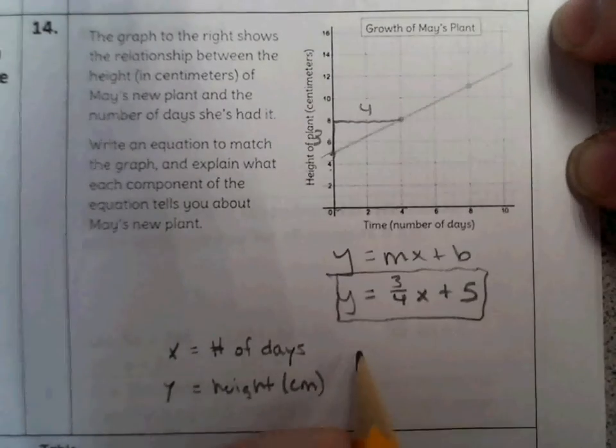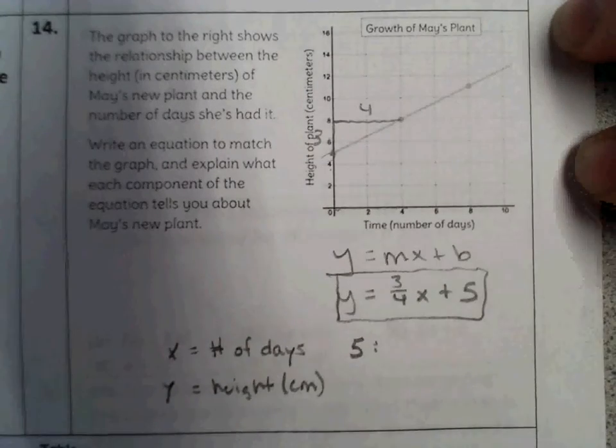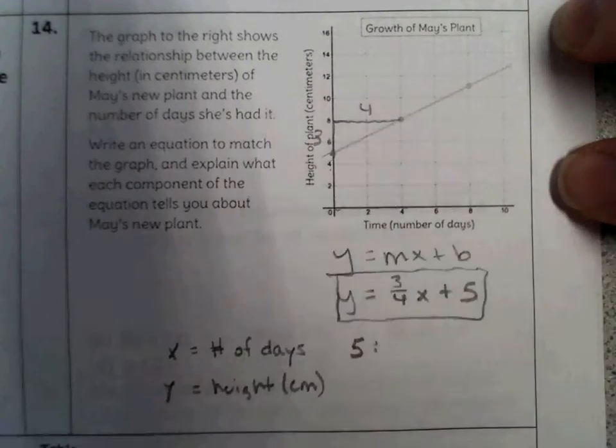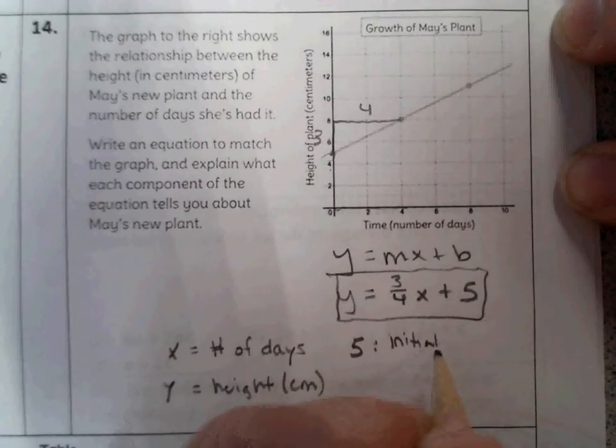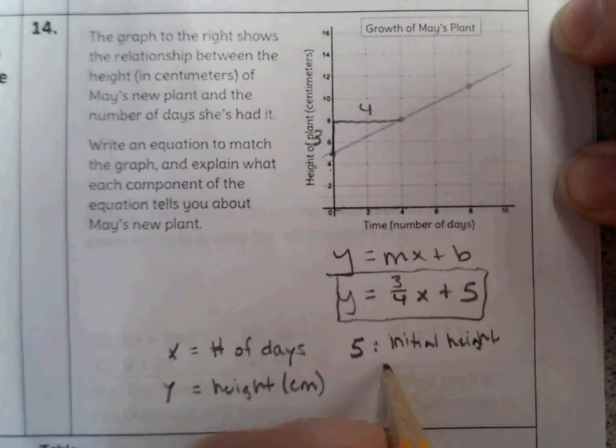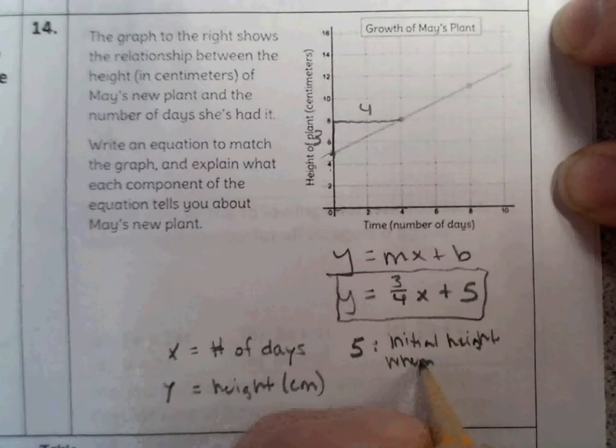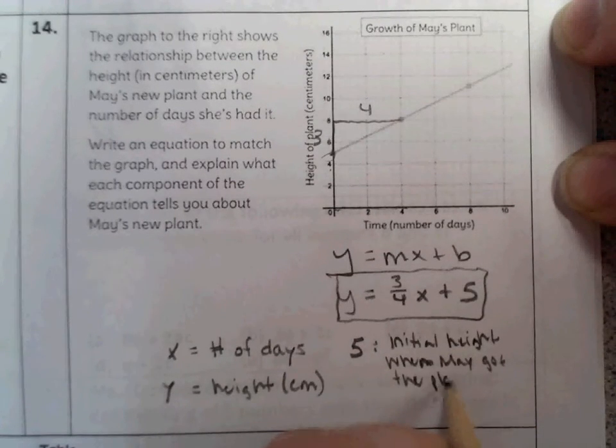The 5, the y-intercept represents the height that it started at. So I'll put initial height when May got the plant.